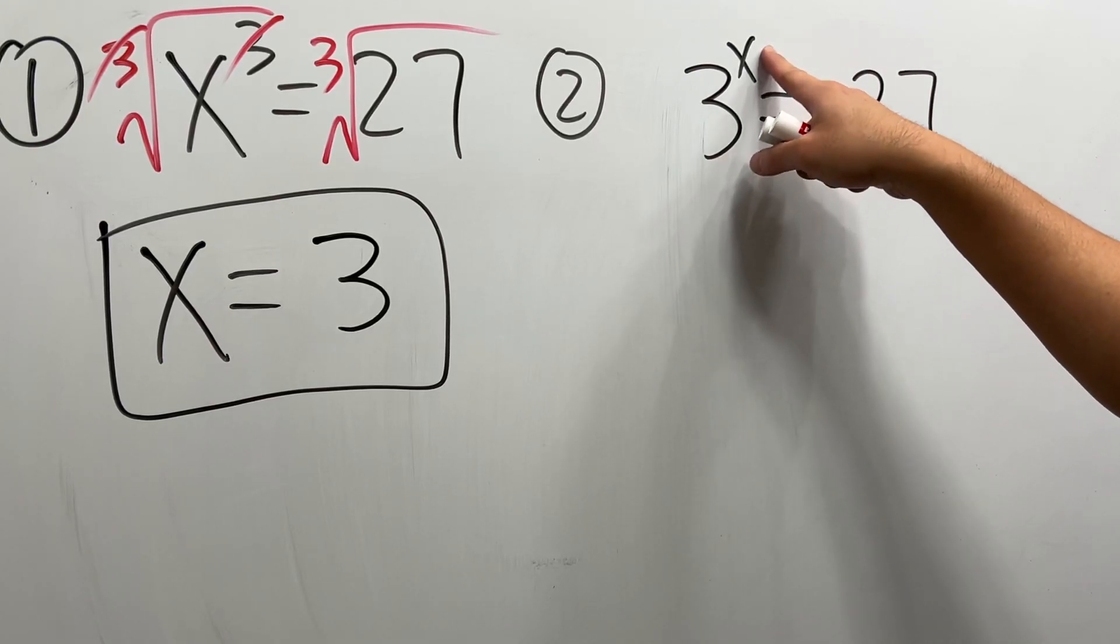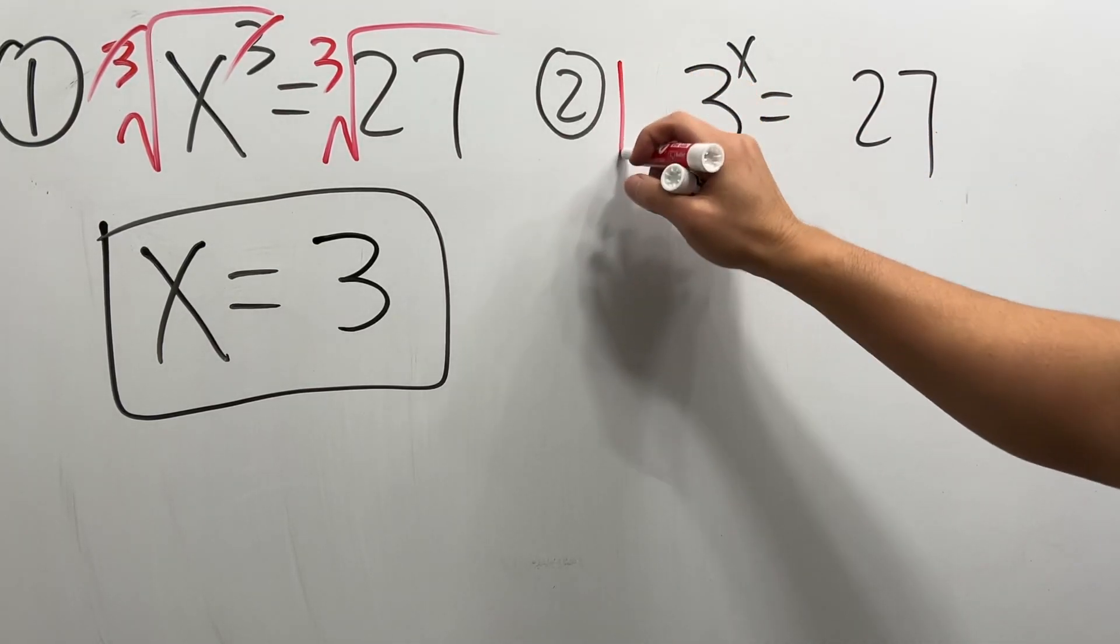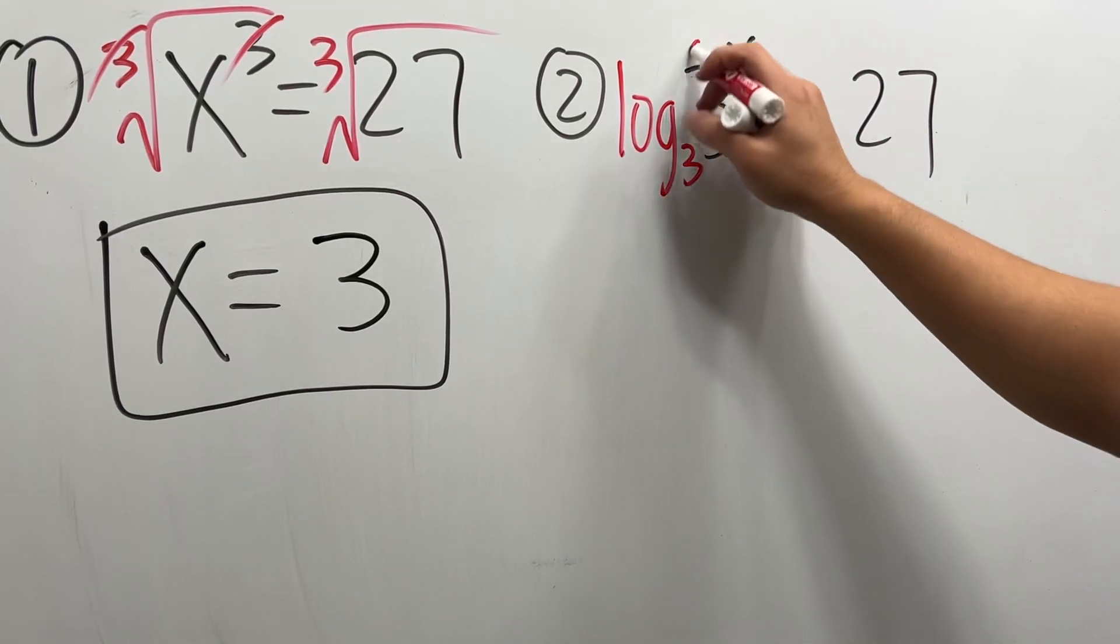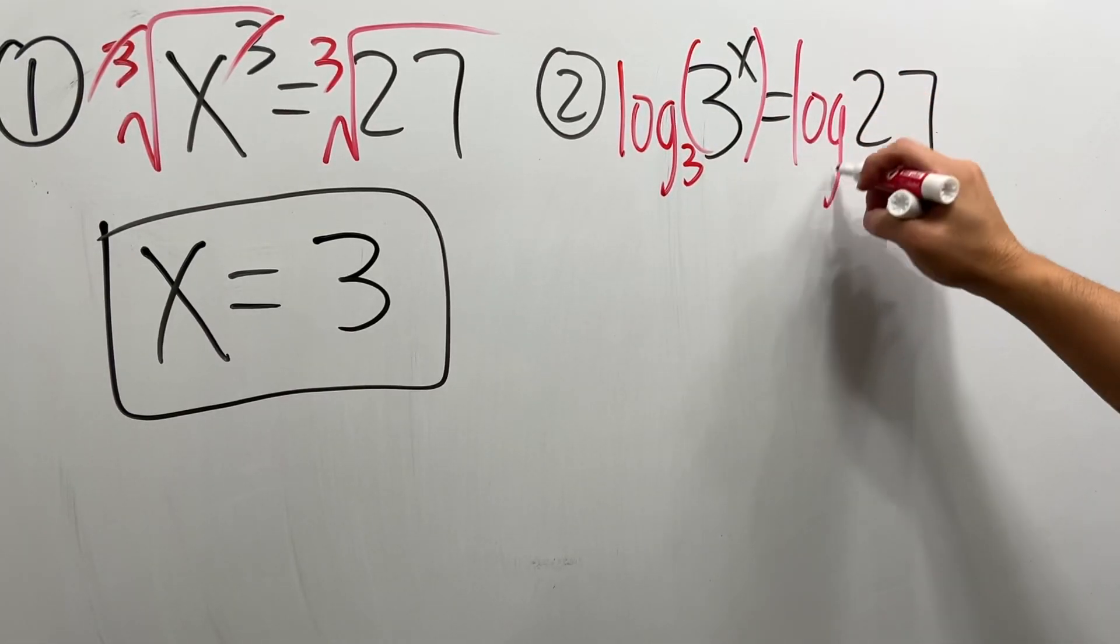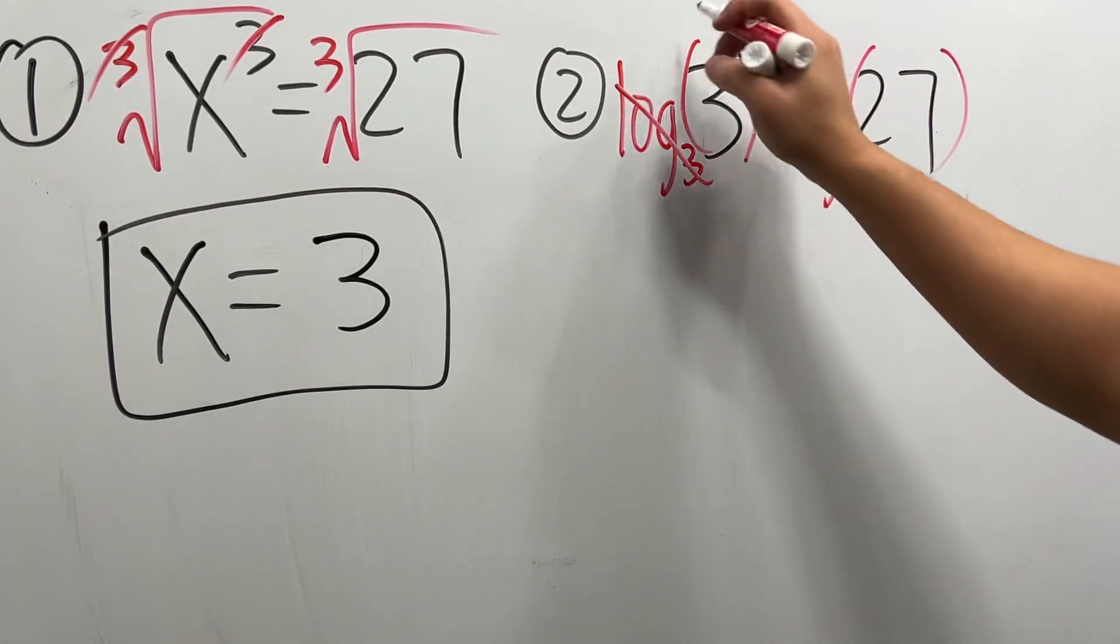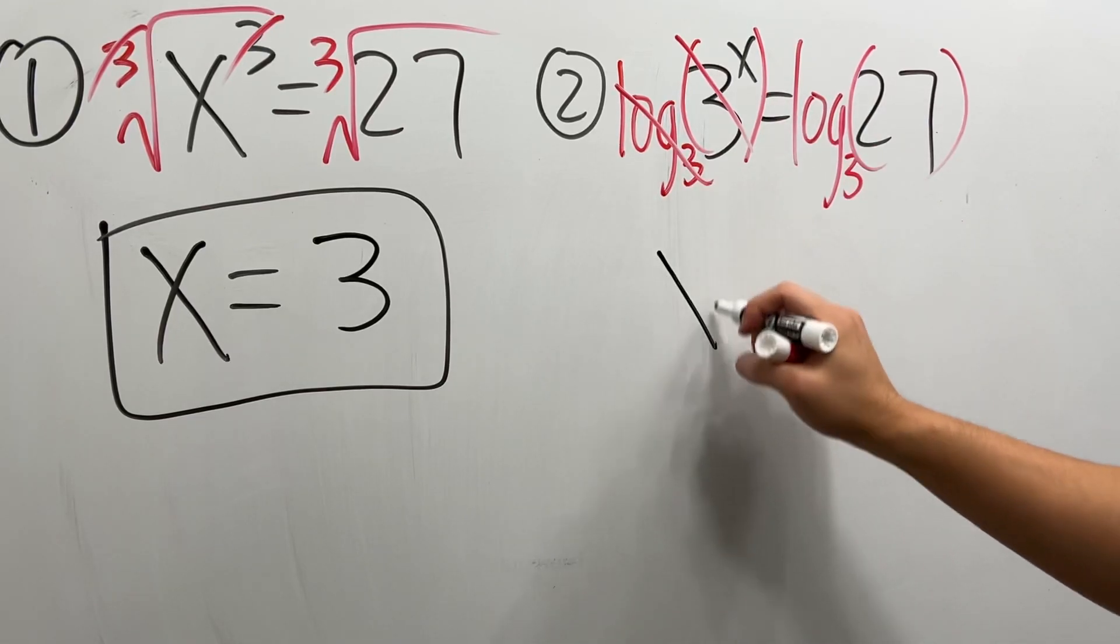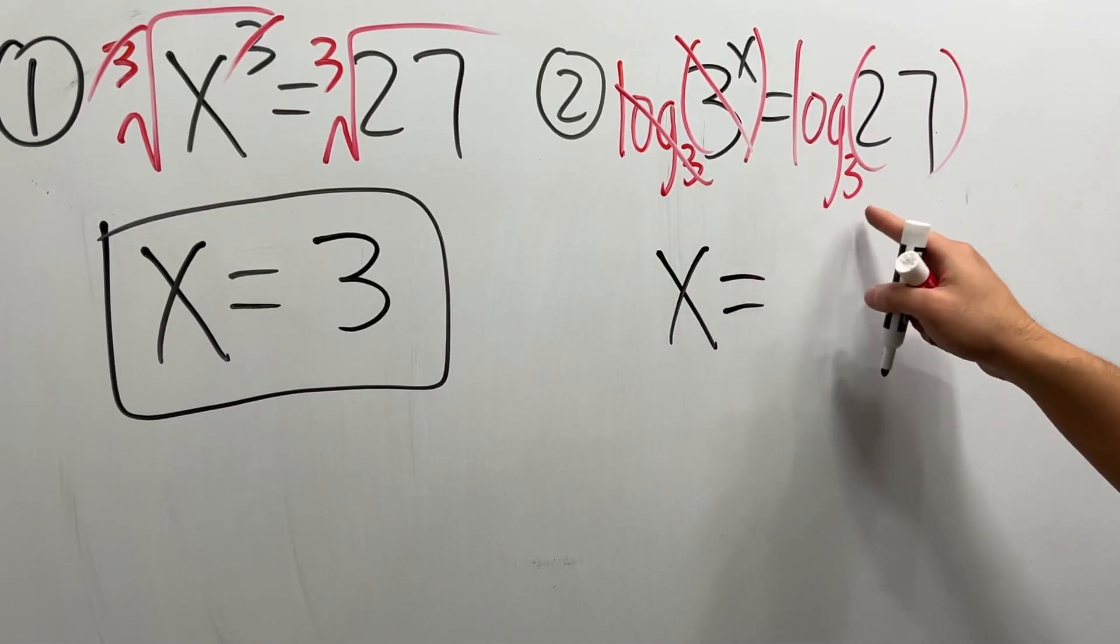Now for this right here, when we have 3 in the base and then the x power, we are going to take the logarithm log base 3 both sides so that this and that can cancel and we will get x is equal to log base 3 of 27.